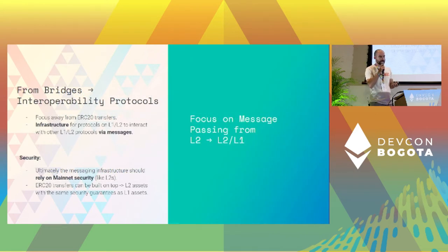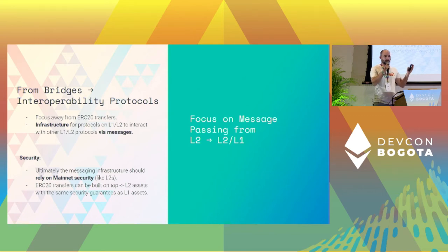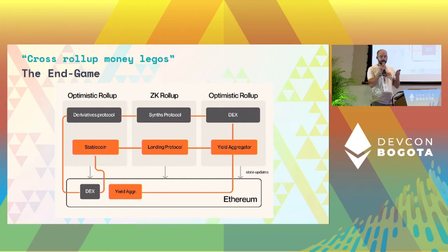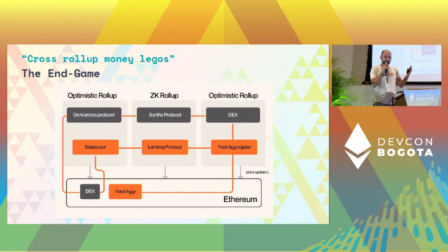What we propose is that bridges should move away from just ERC-20 token bridging and focus more on message passing — how do you pass messages from one L2 to another L2 or to L1. The end game of that is cross-rollup money Legos. In the same diagram as before, you can basically use a DEX on L1 to communicate with a derivatives protocol on an L2, and all these kinds of synergies.